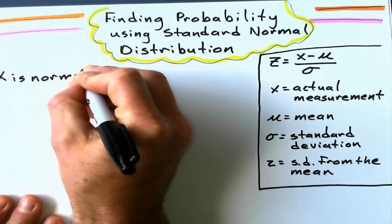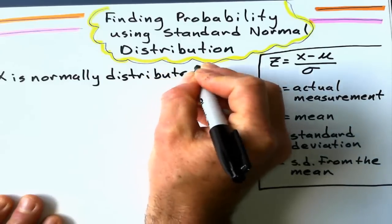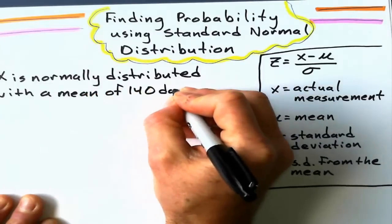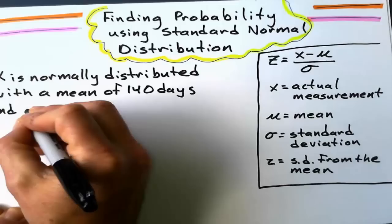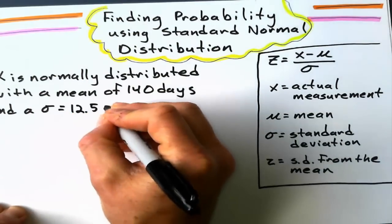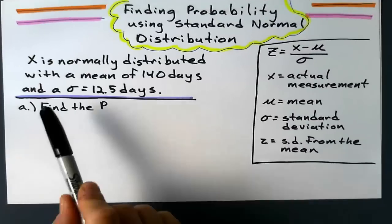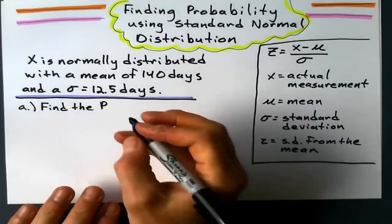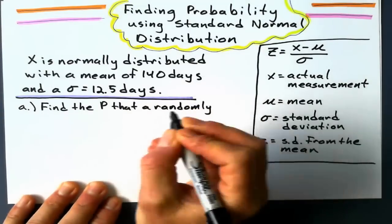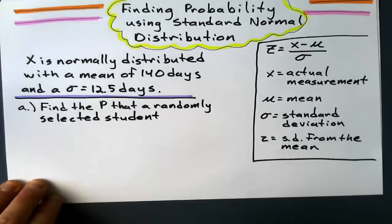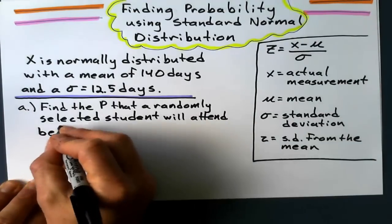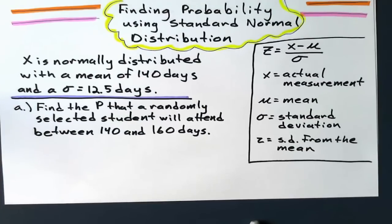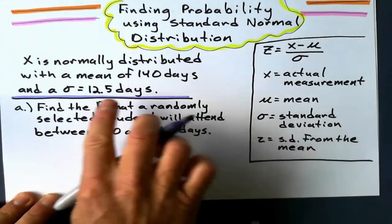We've got X is normally distributed with a mean of 140 days. Let's say we're talking about student absences here. And a standard deviation of 12 and a half days. The problem we're going to do here is find the probability, with my standard deviation given and my mean given.